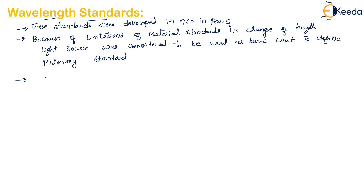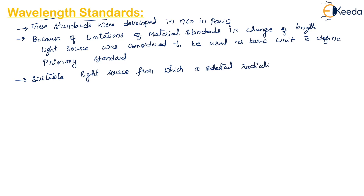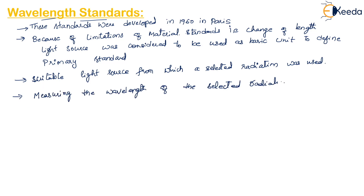For this purpose, they selected a suitable light source from which a given radiation could be selected. The wavelength of the selected radiation was then measured, and it is used as the basic unit for length. So they started measuring the wavelength and used it as the basic unit of length.